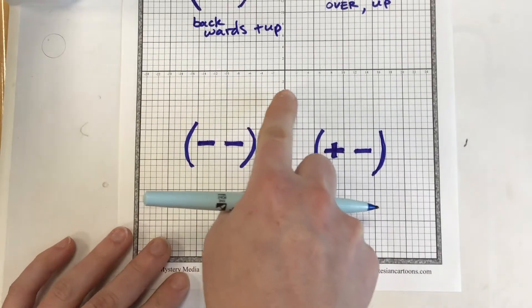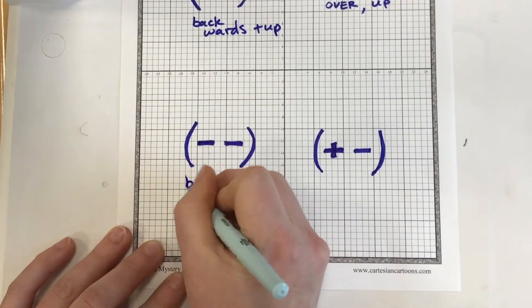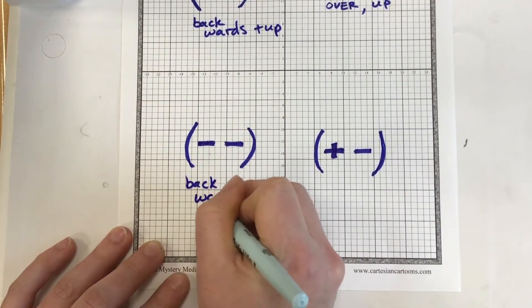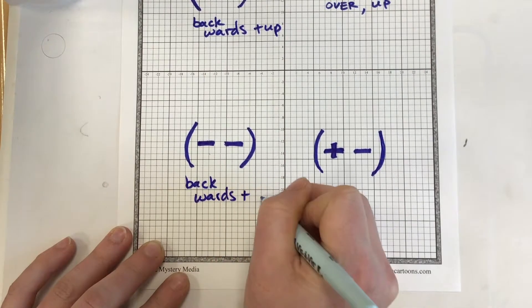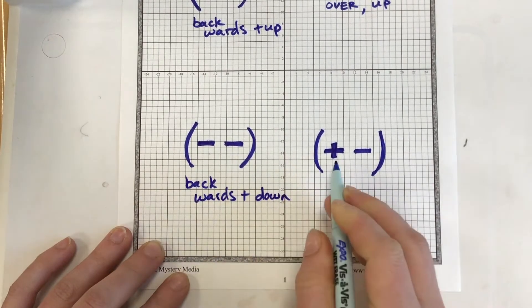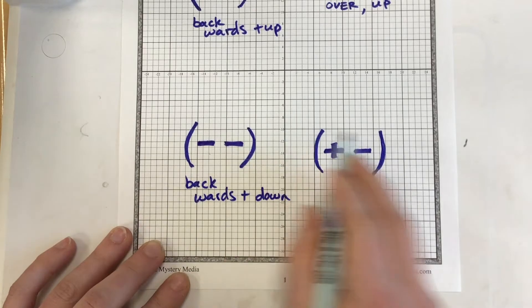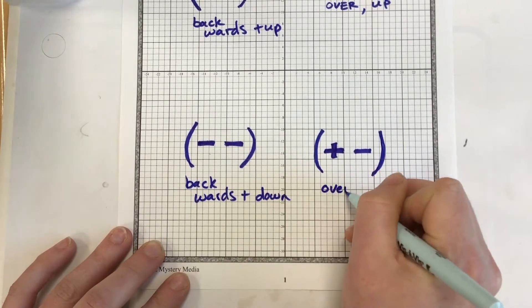This one is negative negative, so it's backwards and down. And this one is positive negative, so this is over and down.